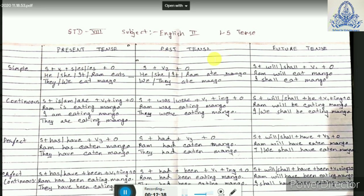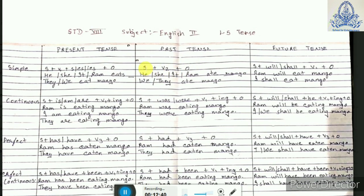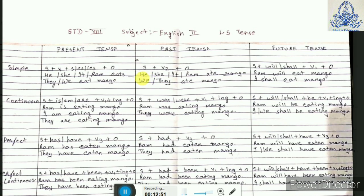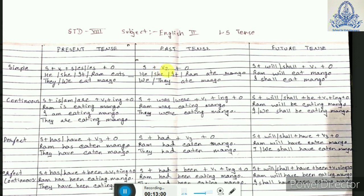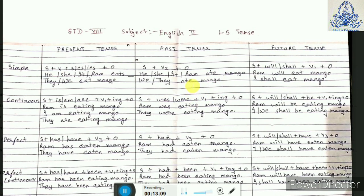Same way, simple past tense. In simple past tense we have a subject, V2 — verb 2 that is past tense — and an object. The subject can be he, she, it, Ram, or any singular subject. For example, 'Ram ate mango.' Verb 2 is the past form; eat, ate, eaten are the three forms. So here we write verb 2 and 'Ram ate mango.'